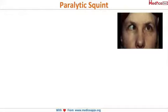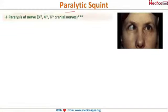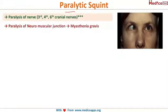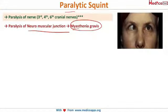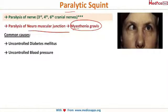The common type is paralytic squint. Whenever we say paralytic, think about the nerves — there are only three nerves: the third, fourth, and sixth cranial nerves. Either these can get paralyzed, or the neuromuscular junction can get affected as seen in myasthenia gravis. The most common causes are uncontrolled diabetes or uncontrolled blood pressure.